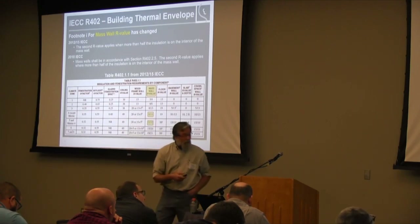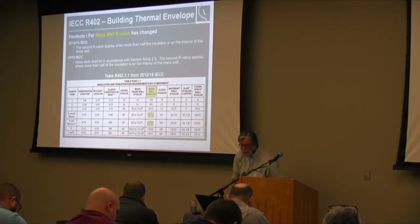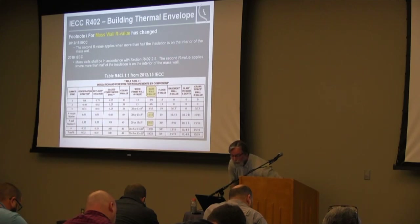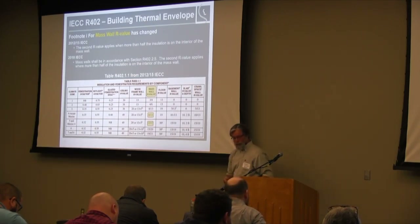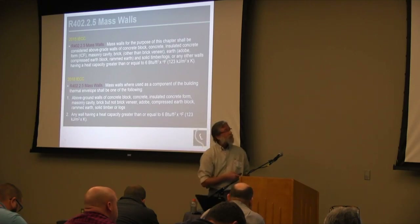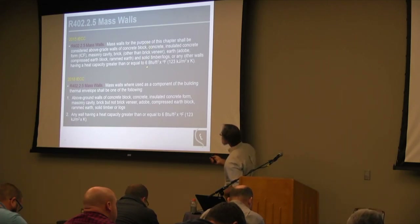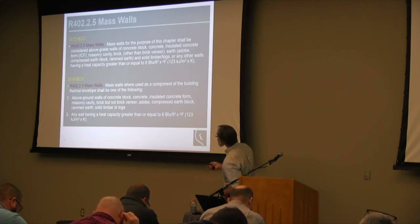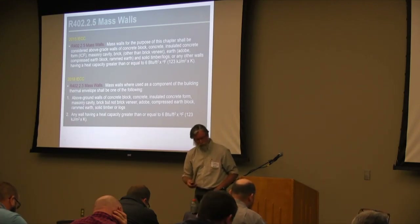Mass wall R-values have also changed from 2012/2015 to 2018, so be aware if you're working on a mass wall assembly such as a school or community building. Most of the changes to the code text in that section are clarifications — the same information, just broken apart and easier to read, with no substantive information changes.